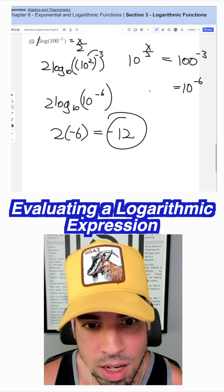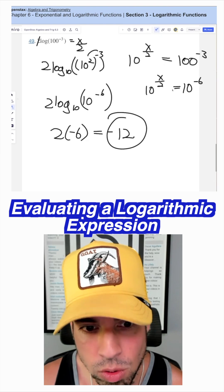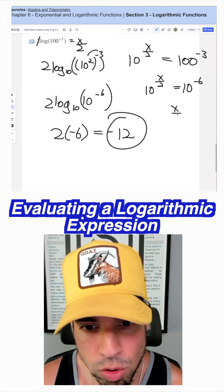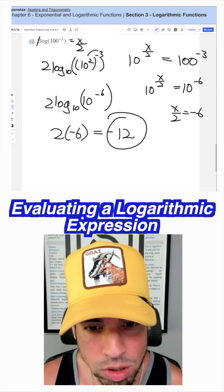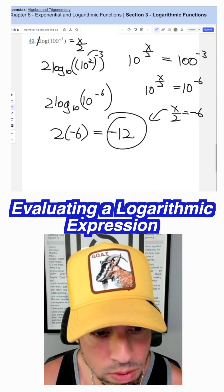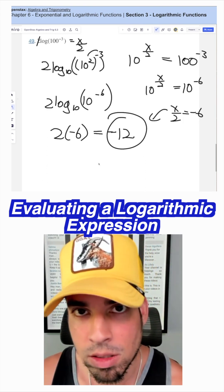which is 10 to the negative six equals 10 to the x over two. Then you set x over two equal to negative six. And you see you'll still end up with that same value of negative 12. That's two ways to do it, done.